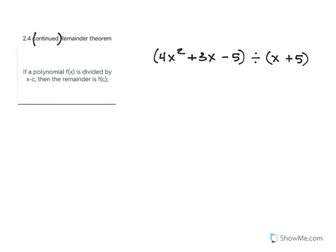This is section 2.4 continued, which starts with synthetic division and then introduces what is called the remainder theorem. The remainder theorem states: if a polynomial f(x) is divided by x minus c, then the remainder is f(c).